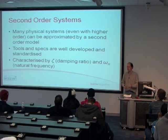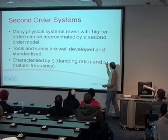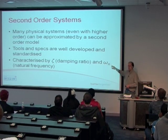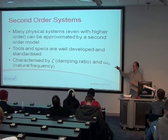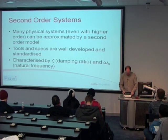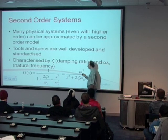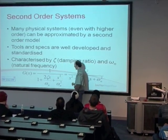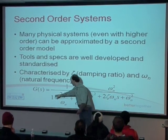Second order systems in general are characterised by two terms. Zeta is the damping ratio, and omega_n is known as the natural frequency. All second order systems consist of these two variables, and the behaviour of the system will be defined by their values. This is the standard form for a second order system when developing transfer functions, where you have a one term in the denominator.